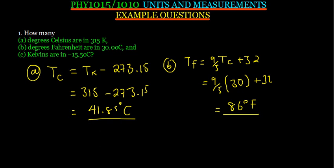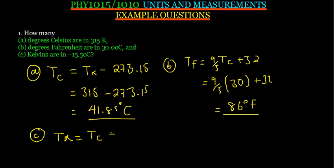How many Kelvins are in negative 15.5 degrees Celsius? To convert, we want to go to Kelvins — we've been given degrees. For the first question, we were given Kelvins and wanted to go to degrees. Now we've been given degrees and are going to Kelvins. So simply make temperature in Kelvins the subject of the formula — take the negative 273.15 to the other side. Temperature in Kelvin is given by temperature in degrees Celsius plus 273.15.